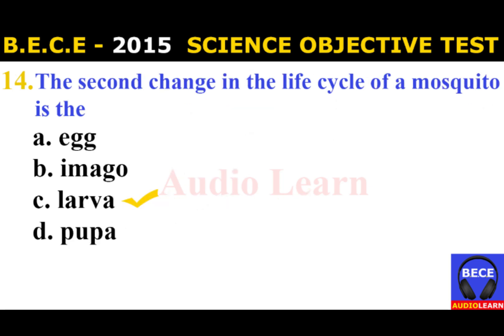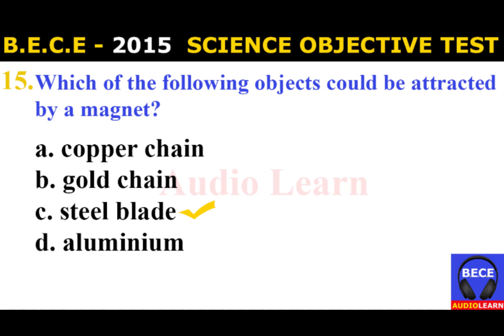Number 14: The second stage in the life cycle of a mosquito is the A. Egg, B. Imago, C. Larva, D. Pupa. The answer is C. Larva. The second stage in the life cycle of a mosquito is the larva.